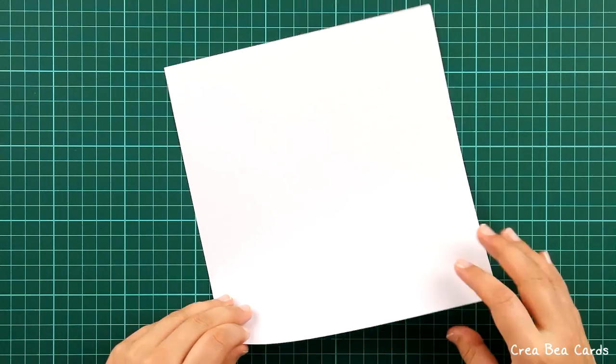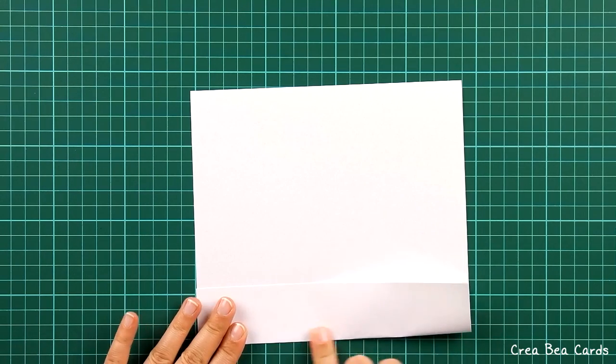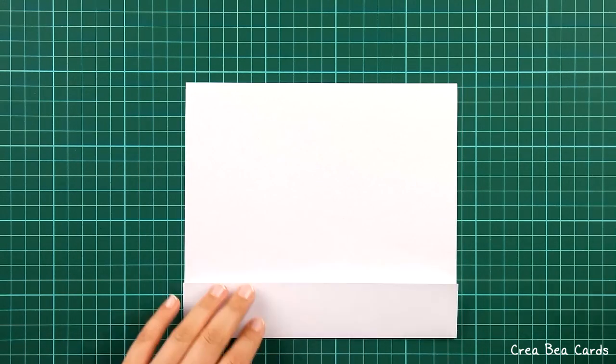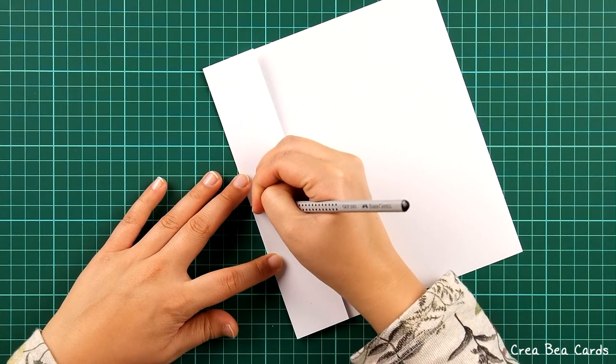Now it's time to work on the holly leaves. First, fold a small part of a sheet of white paper. Draw a half holly leaf shape.